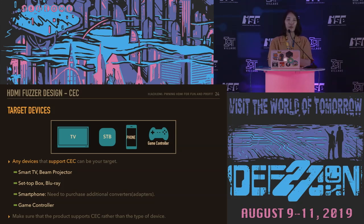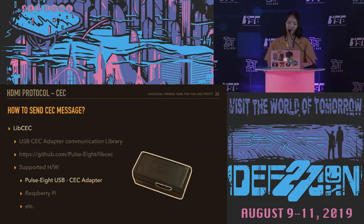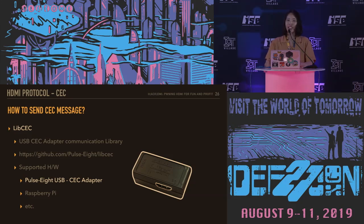For the CEC protocol, whether a device supports CEC is a more important factor in determining the target than the device type itself. For the CEC fuzzer, all you need is a USB CEC adapter and an HDMI cable. We will use pyserial for serial communication. Now it's time to send the CEC message directly to the device. There is a USB CEC adapter communication library called libCEC, which can be found on GitHub. If you have a USB CEC adapter, you can send CEC messages — other adapters are also supported. If you are having trouble buying a new adapter, you can use the library with a Raspberry Pi.